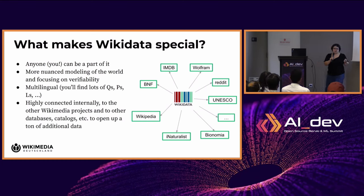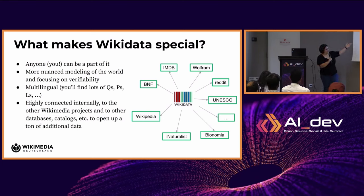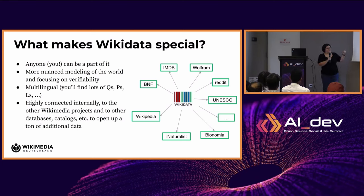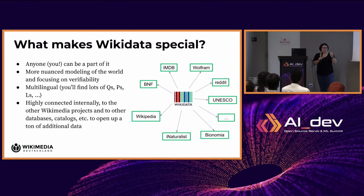Wikidata is also connected to a ton of resources on the internet — like IMDB, the French National Library, UNESCO's World Heritage Database, Reddit — we probably have a connection to it. If you're looking for the IMDB entry for a famous actor, you can find it connected to their social media account, their Facebook page, and Wikidata is a great hub to get to all those places on the web.